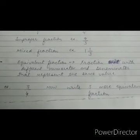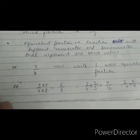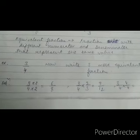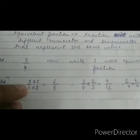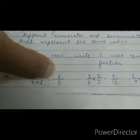The question is: write three more equivalent fractions of three upon four. It is very easy. Multiply both numerator and denominator by 2 to get six upon eight. Multiply by 3 to get nine upon twelve. Multiply by 4 to get twelve upon sixteen. So the equivalent fractions of three upon four are six upon eight, nine upon twelve, and twelve upon sixteen.